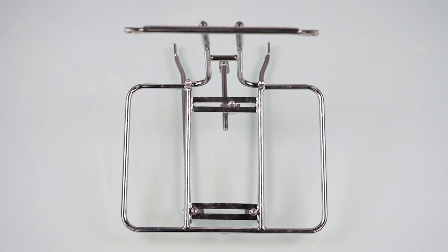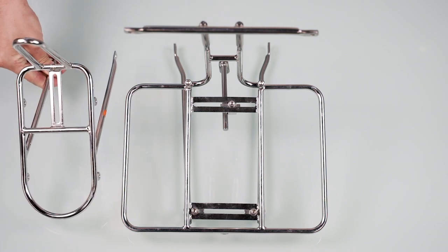The platform is known as a demi-porteur. Its size is somewhere between a full porteur and a traditional randonner front rack.